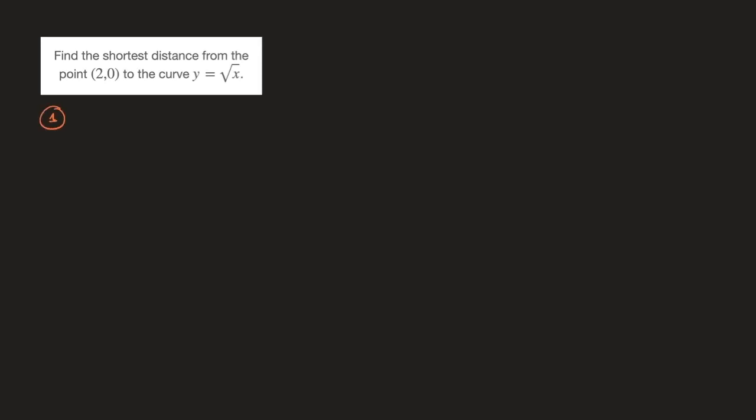I'll start by moving this question to the side. Just like any other optimization problem, we can solve this in four steps. The first step is to find an expression for the quantity we wish to optimize written in terms of the variables. In this case, the quantity we're trying to optimize is the distance from the point to the curve. To get the best idea possible of what we're dealing with, I like to make a sketch.